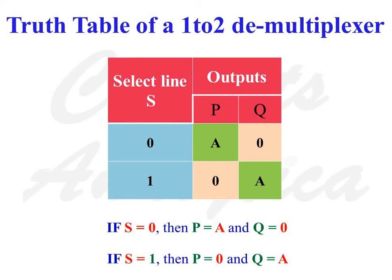This is the truth table of a 1 to 2 demultiplexer. When select line S is equal to 0, output P is equal to data line A and output Q is equal to 0. When select line S is equal to 1, output P is equal to 0 and output Q is equal to data line A.